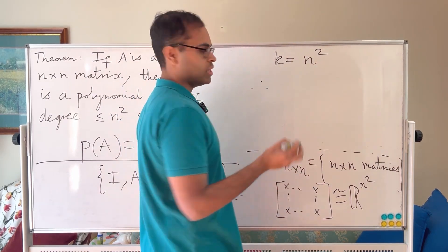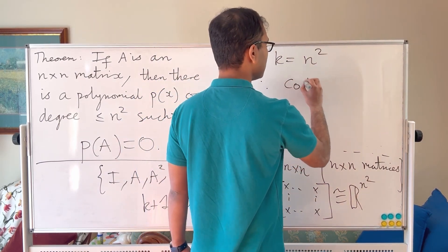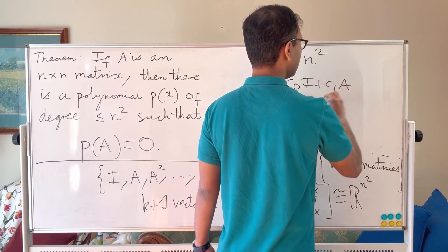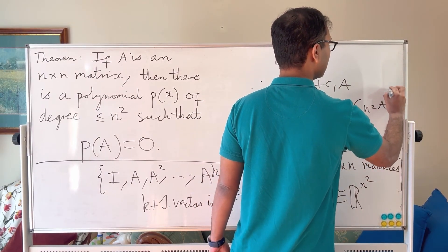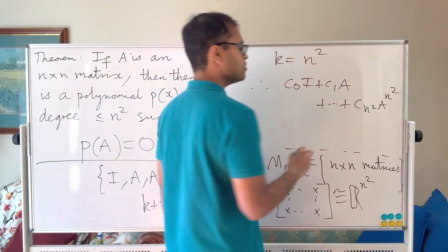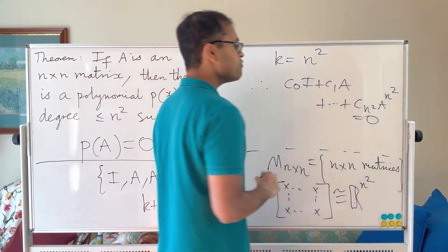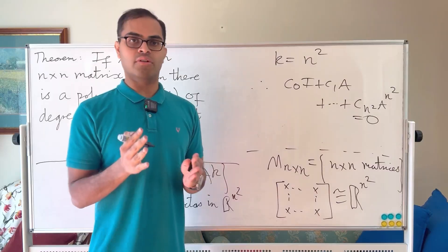So therefore, there exists a polynomial. So therefore, we can say that C_0 I plus C_1 A plus all the way up to C_{n²} A^{n²} is equal to zero for some c_i's that are not all zero.